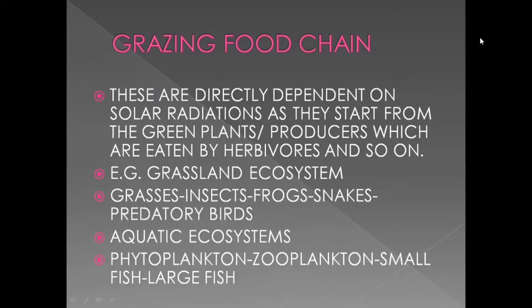In grazing food chains, green plants are produced as the first step. After that, herbivores such as insects, rats, mice, grazing cattle, or zooplanktons eat the plants. After that, energy reaches the level of frogs, snakes, and other organisms higher up in the chain.